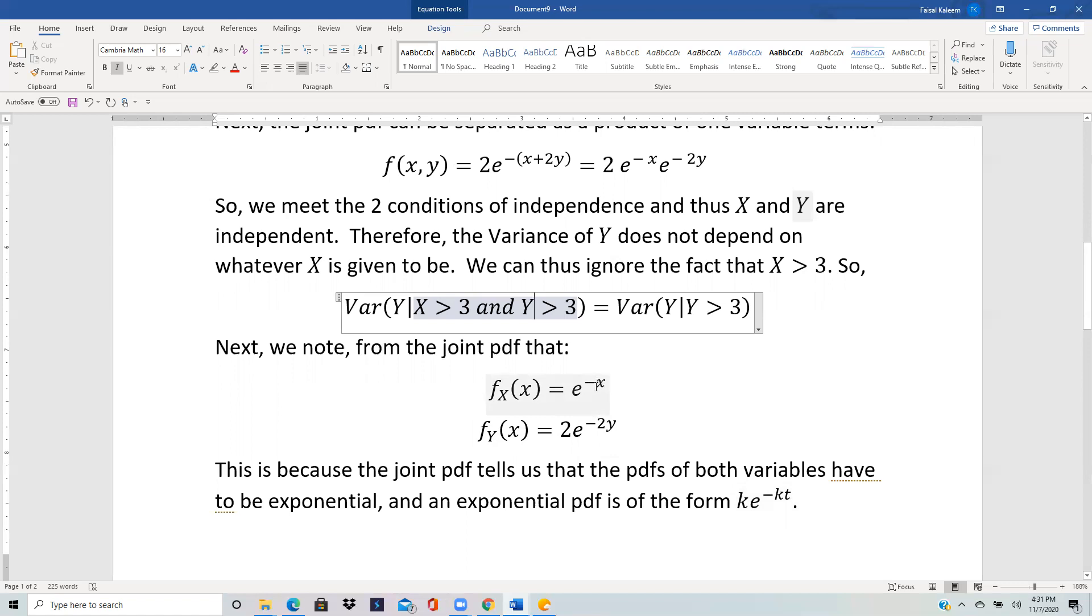And therefore the only way this can happen for both of these is - here you just have a one so you have to have a one here and here you have a two so you have to have a two here - so this tells us that these are the two individual pdfs of the x variable and the y variable.